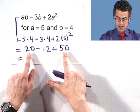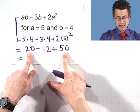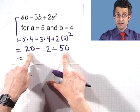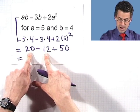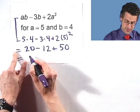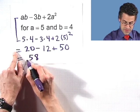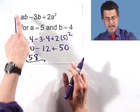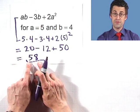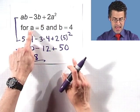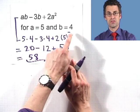Well, I'll just actually rearrange and say, well, 50 and 20 is 70, and 70 minus 12 is 58. So the answer is that this algebraic expression produces the value 58 when a equals five and b equals four.